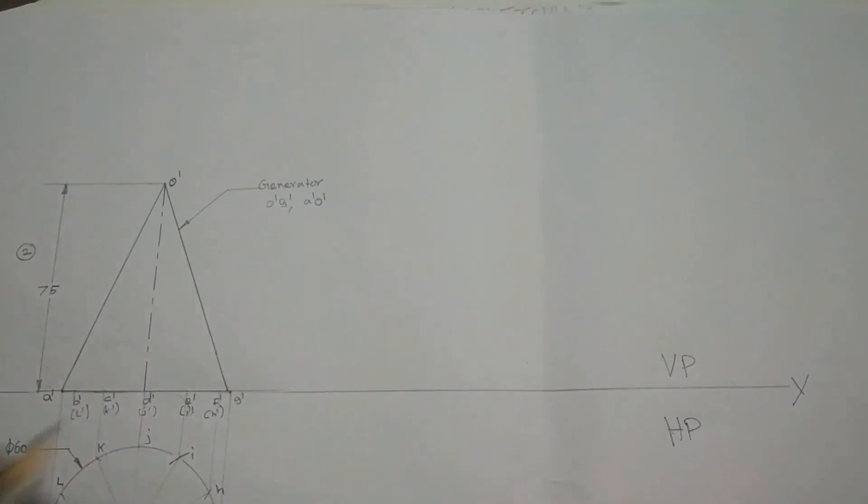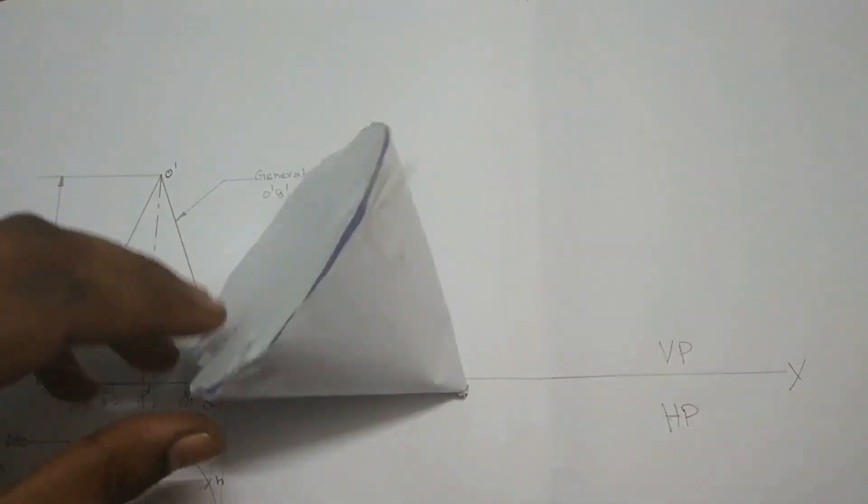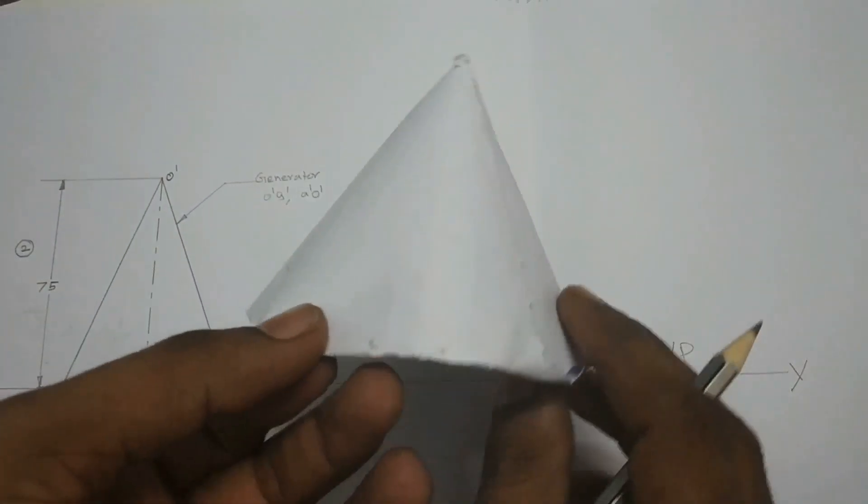So we have to draw a diagram in such a way that the G dash, O dash line has to be touch the XY.